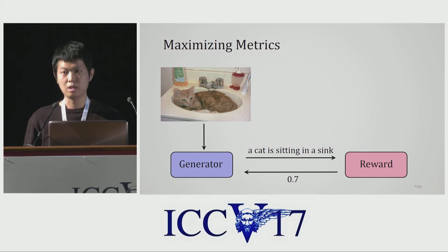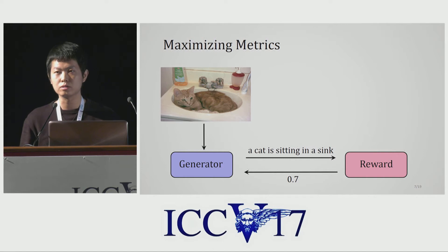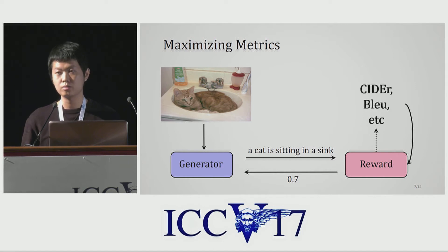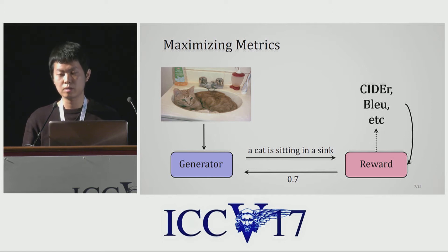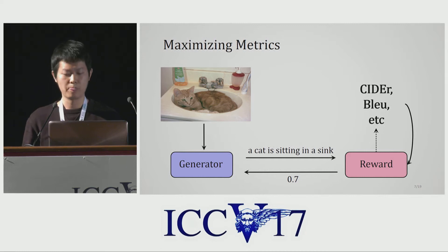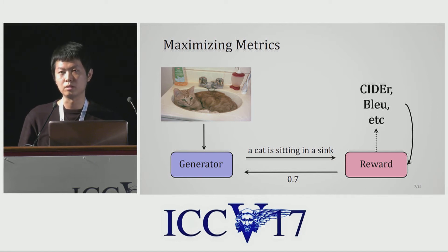Specifically, caption generation is regarded as a sequential action selection process guided by the evaluation metrics as rewards. During training, the caption generator samples captions and aims at maximizing the expected rewards. By using the metrics as global guidance, they avoid mimicking the detailed wordings of training captions.